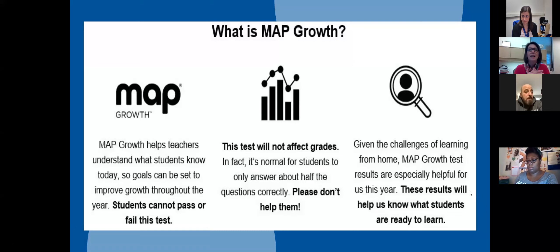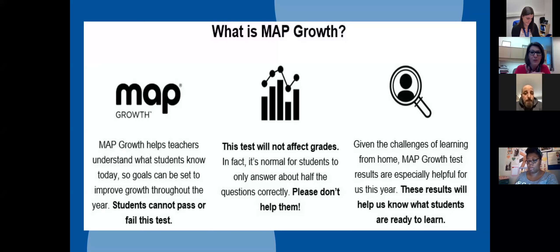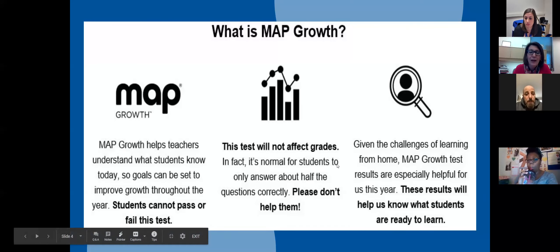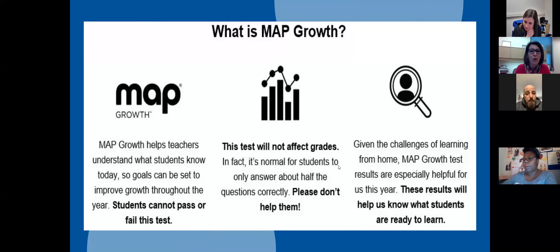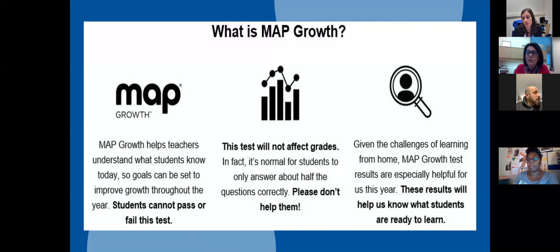On this particular test, kids are going to get things wrong, and that is totally okay. About half of the questions they come across they may get wrong because the questions get harder as they do well. We do ask that if your children are taking the test at home, do not help them. That will give us skewed results and won't provide useful information. We really want to see what the students know on their own, so the results can give teachers valuable information about what students are ready to learn and what they need support on.